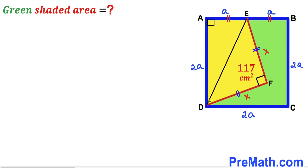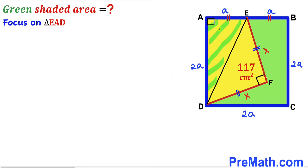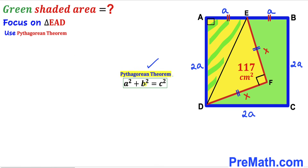In the next step, I've connected vertices D and E, which gives us two right triangles: right triangle EAD and right triangle EFD. We've divided the yellow shaded region into these two right triangles. Now let's focus on triangle EAD and apply the Pythagorean theorem. Our hypotenuse is DE, and the two legs are lowercase a and two times a.